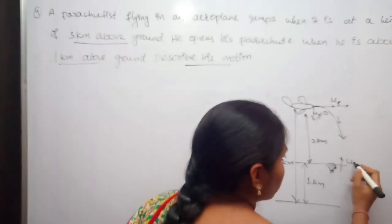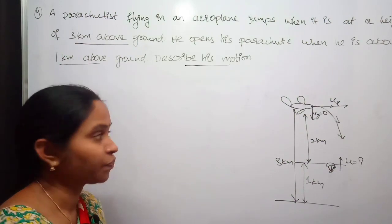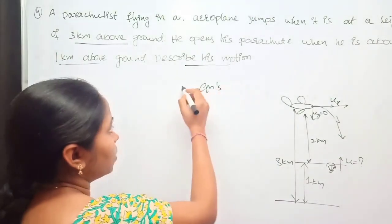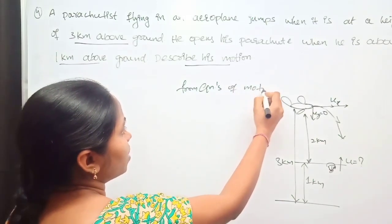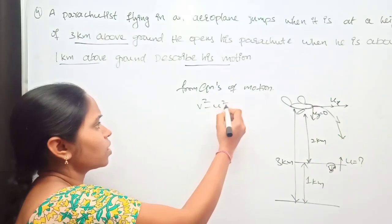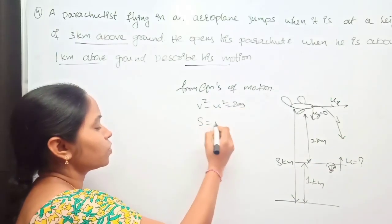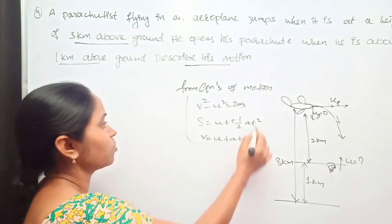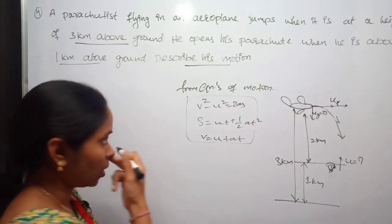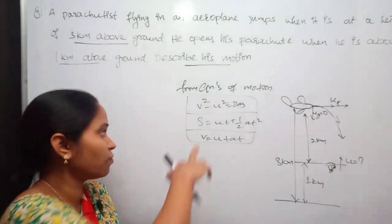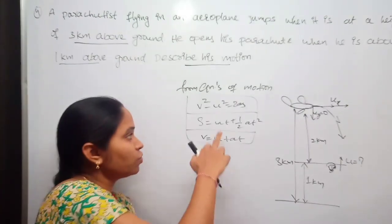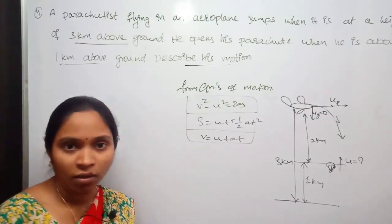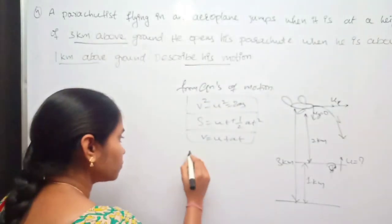This will be the final velocity before opening the parachute, and we have to find out this velocity. To solve this problem I am going to use three equations of motion. We have three equations: v² − u² = 2as, s = ut + ½at², and v = u + at. In these equations, v is the final velocity, u is the initial velocity, t is time of flight, a is the acceleration, and s is the displacement.